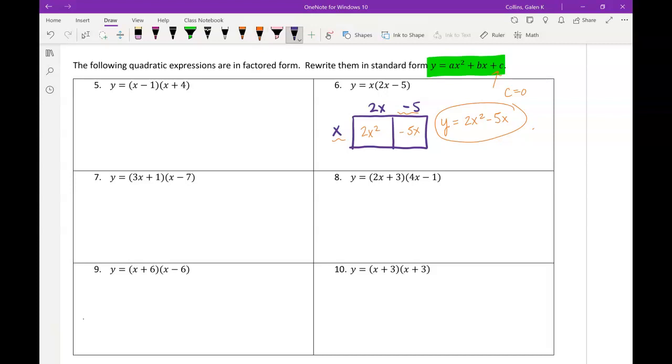Okay, so in number eight, it's a little trickier just because we have a 2x and a 4x here. So one side of my rectangle is 2x plus 3. The other dimension of my rectangle is 4x minus 1.